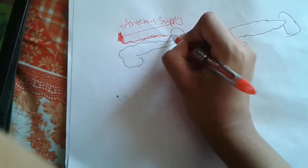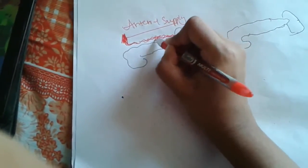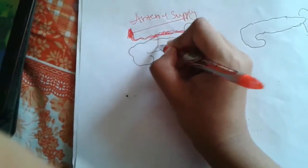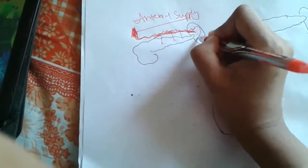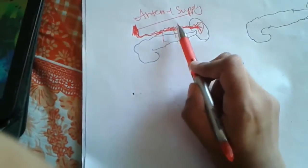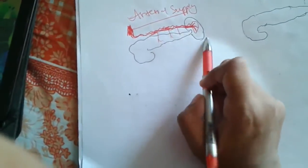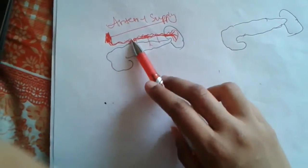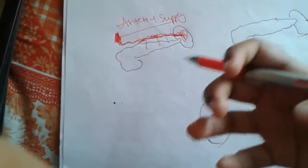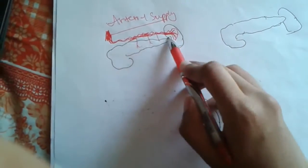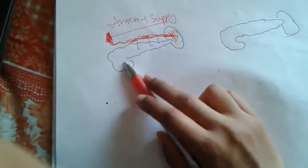The splenic artery traverses through the lieorenal ligament and then enters the hilum of the spleen. Before entering the hilum, it gives two branches to the pancreas. Before entering the hilum it also divides into two or three branches. This splenic artery is remarkably tortuous. This tortuosity helps in the movement of the spleen and also accommodates the distension of the stomach. It also helps in the regulation of blood into the spleen at different metabolic activities.